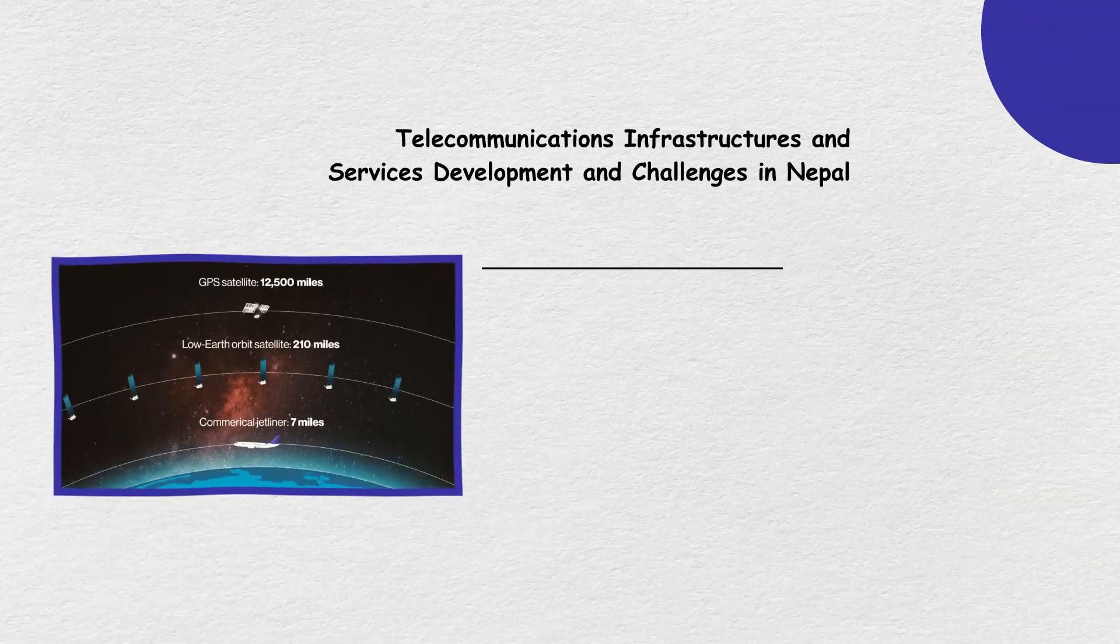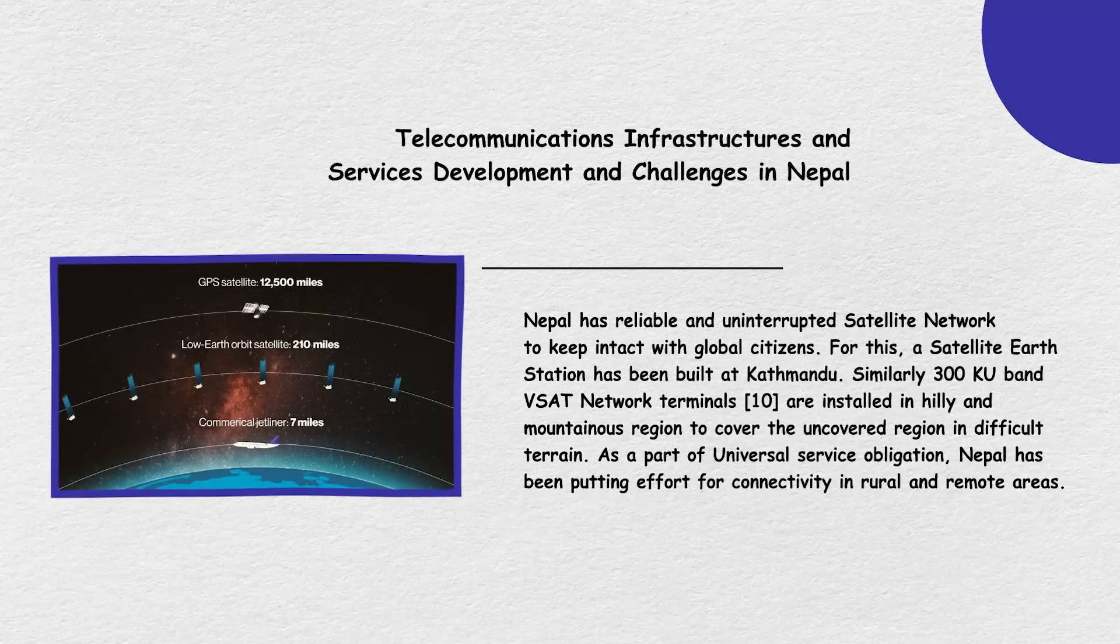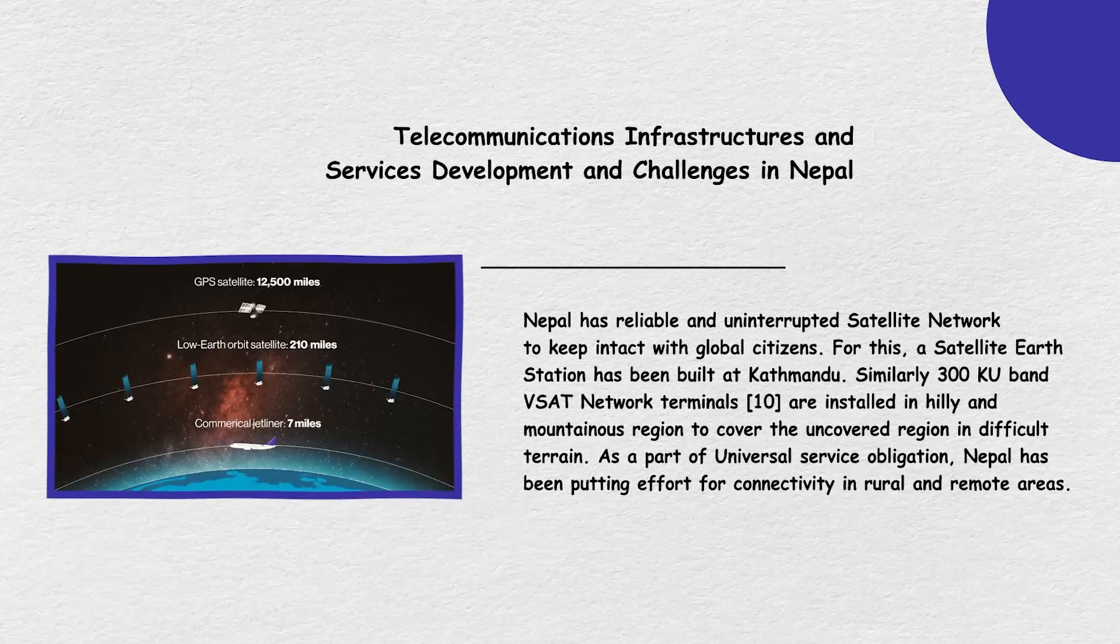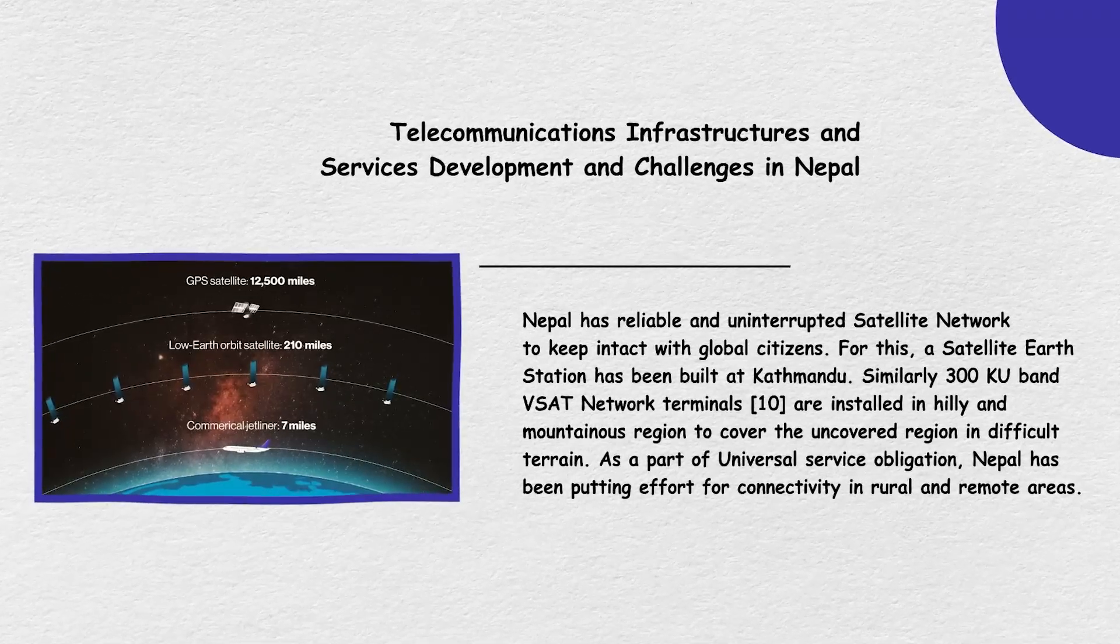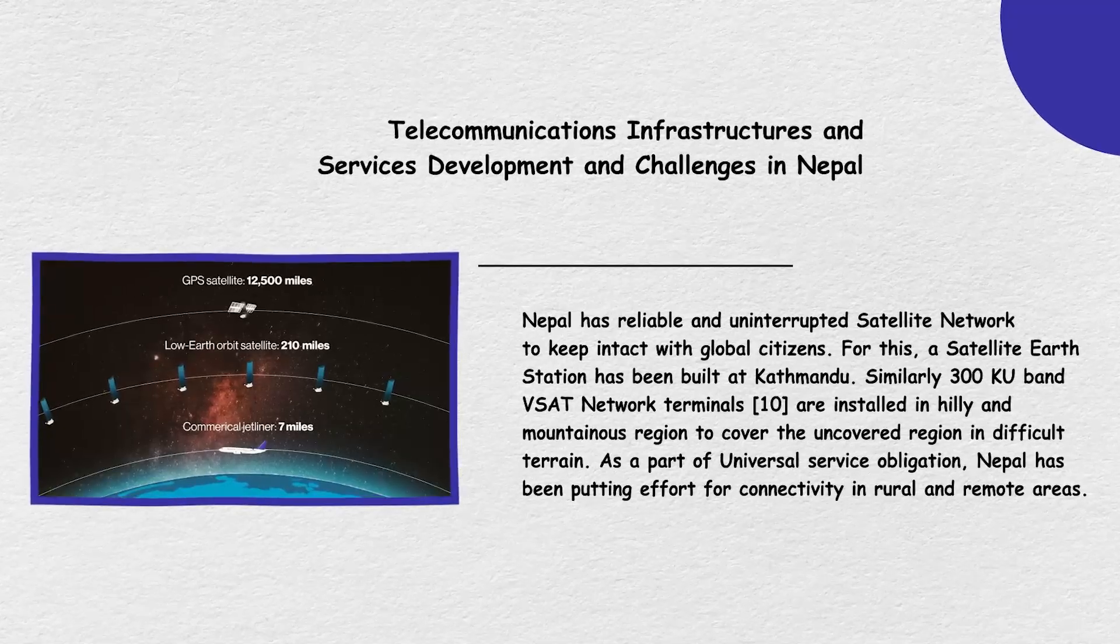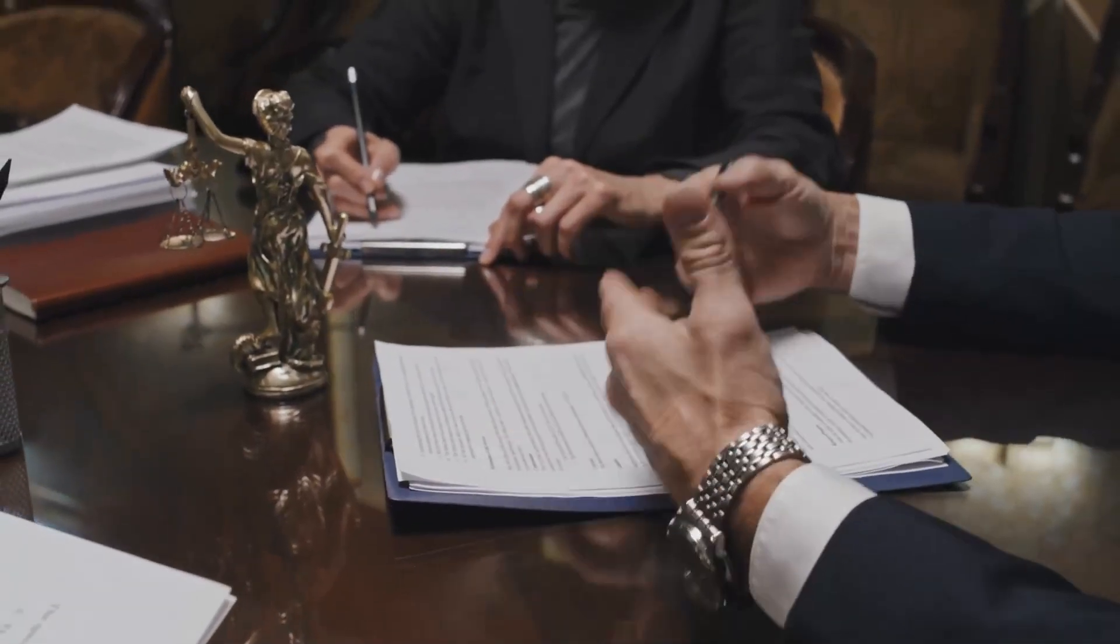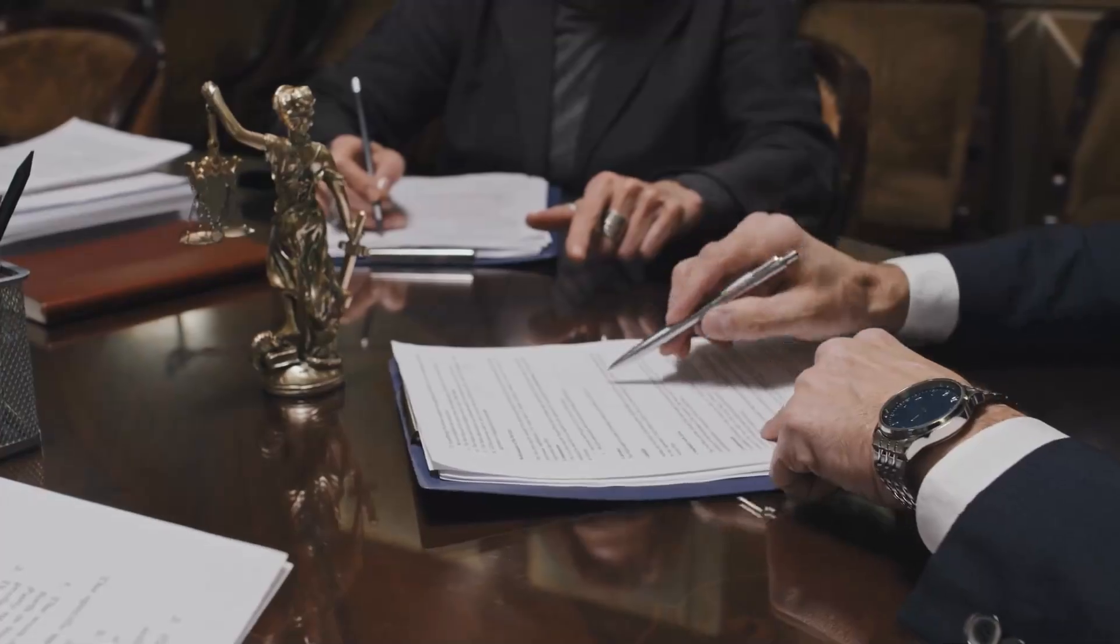According to Shretha's 2022 study, Starlink's low-Earth orbit satellites could bypass these geographical challenges providing internet access even in the most isolated areas. However, Nepal's legal requirements for foreign investments to involve local partners complicate Starlink's entry into the market.